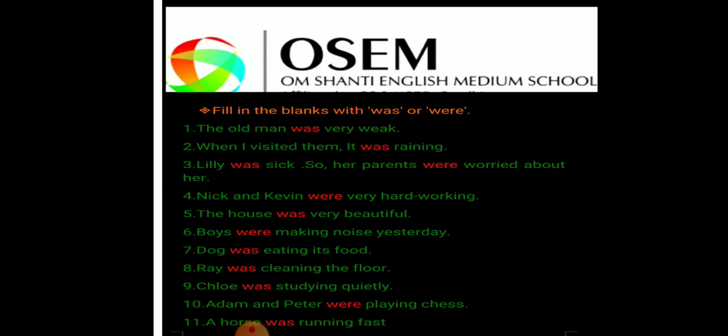Eleven: A horse was running fast — a horse, singular noun, that's why we have to use was. Simple है। आपको क्या याद रखना है? Was means singular noun, and were means plural noun.